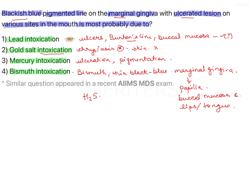Going by the history and clinical presentation, we have three possible answers. Mercury intoxication is eliminated because of its diffuse discoloration and additional problems. Gold is also eliminated. That leaves us with lead and bismuth. In my opinion, both are correct answers to this history, but when you have to pick one, you should go for bismuth because the line is very specific — in lead intoxication the line is a little more diffuse.